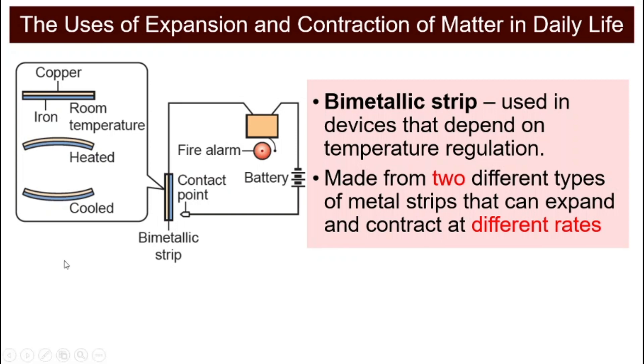Look at the picture here. There is a bimetallic strip with copper at the top layer and iron at the lower layer. During room temperature, they are not expanding or contracting. When it is heated up, you can see that the copper actually expands more than the iron, and hence it will bend downwards. When they contract, they contract differently as well. Copper contracts more compared to the iron, and that is why copper is shorter and iron is longer and it bends upward.